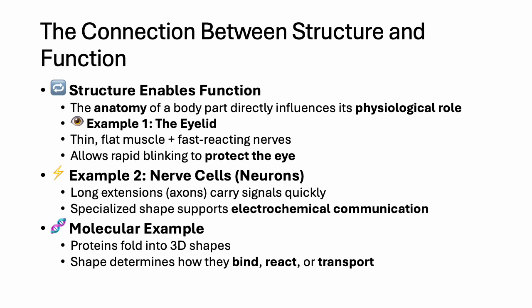One of the most powerful principles in biology is the idea that form follows function — the way something is built directly relates to what it can do. This is true at every level of organization in the human body, from entire organs down to individual molecules. Take the eyelid: its thin, flat muscle and highly responsive nerves allow it to blink quickly and automatically. This rapid reflex is essential for clearing debris and protecting the delicate surface of the eye.